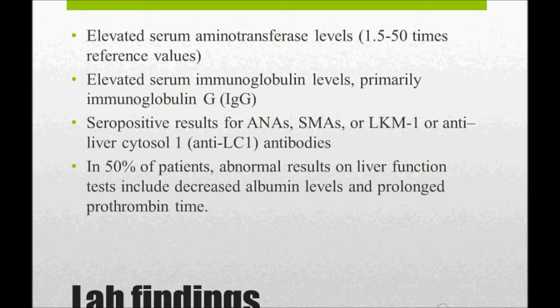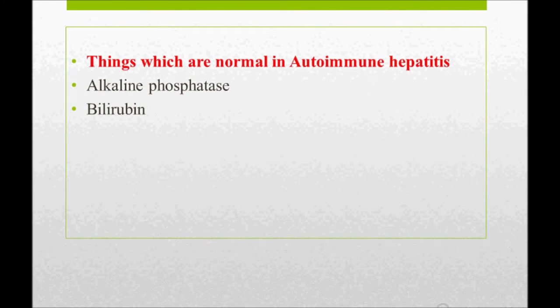As the disease progresses you may see decreased albumin or prolonged prothrombin time, but initially in USMLE they may not give these findings. Instead, the patient may come in for regular follow-up with elevated AST and ALT. The key point: in autoimmune hepatitis, alkaline phosphatase is at a normal or near-normal level, and bilirubin is also initially normal — though it can elevate in the late stages.